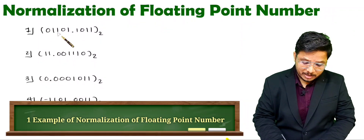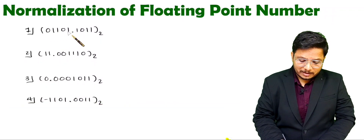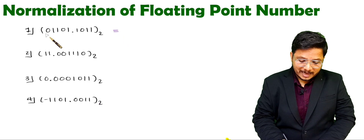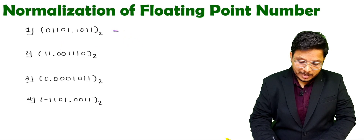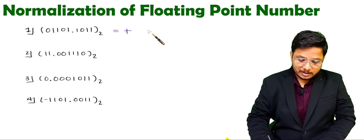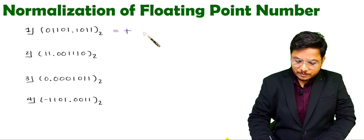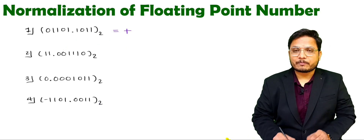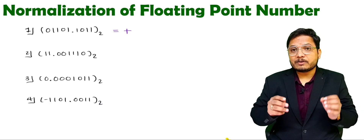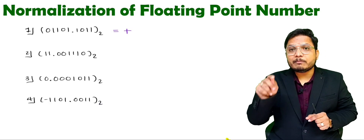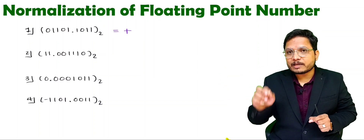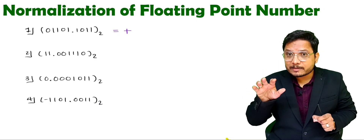So here we are having the first number: 0 1 1 0 1 dot 1 0 0 1 1. Now when you want to normalize this, first of all you will have to see what the sign is. The sign is positive. Normalization means you will have to represent any number as per one point something. Remember this — normalization means representing the number as one point something.